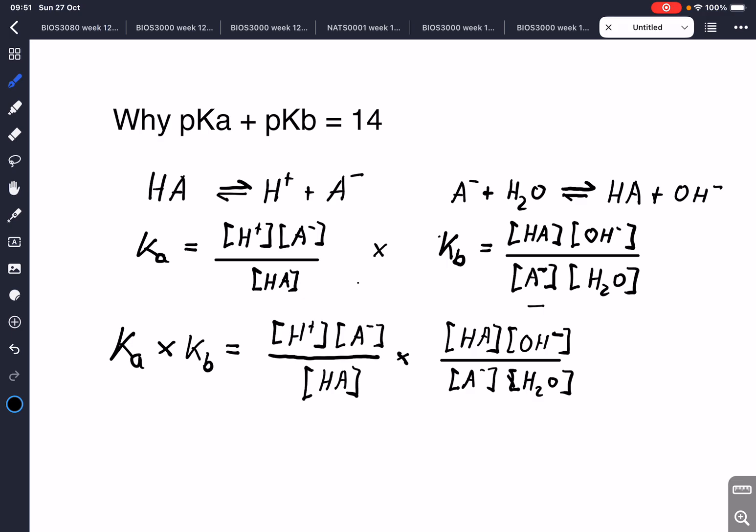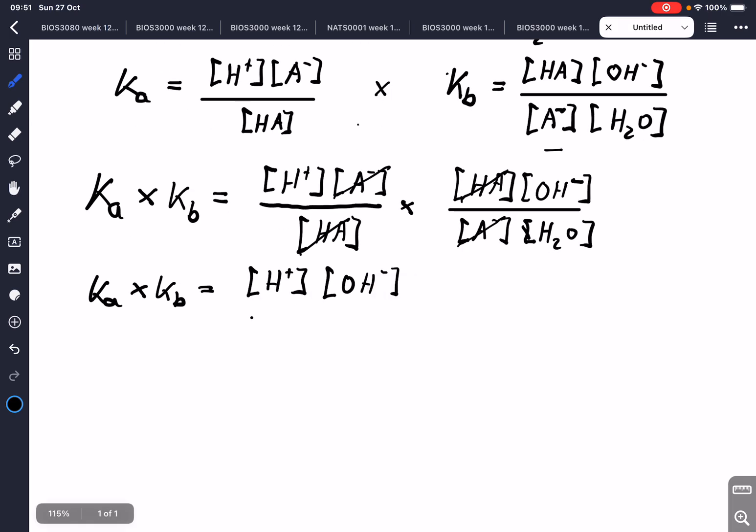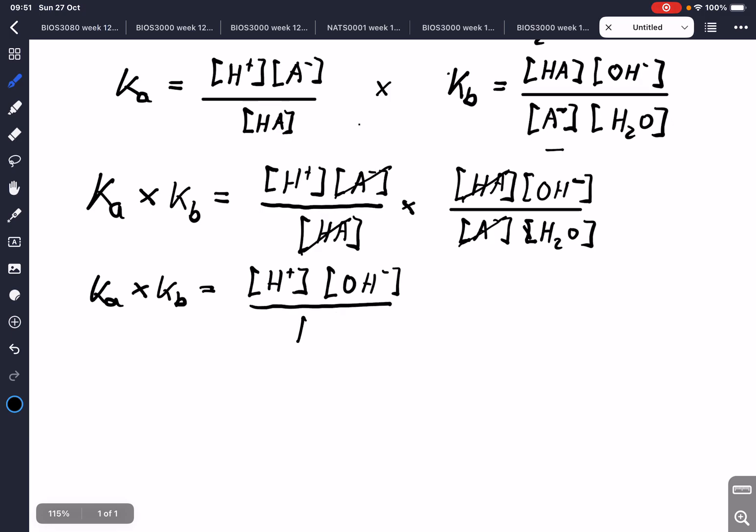So all we have done is basically multiply these two equations with each other. And what we see is that we now can cancel out the concentrations. So we can cancel out the concentration for HA. We can also cancel out the concentration for A minus. And what we've got left now is Ka times Kb equals, what have we got left?